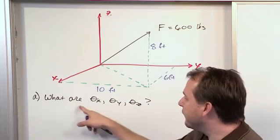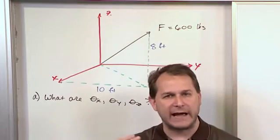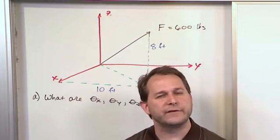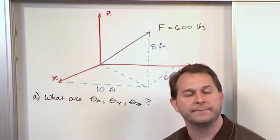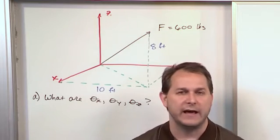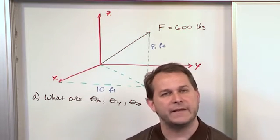So what we're being asked, first of all, to do, we're going to have part a, part b, and part c. The first thing is, given what we have in the drawing, how do we find the direction angles, theta x, theta y, and theta z?